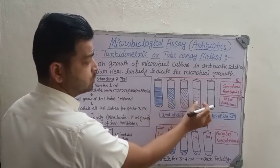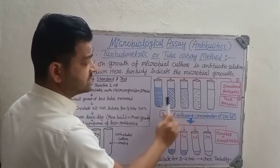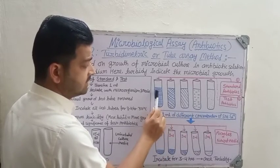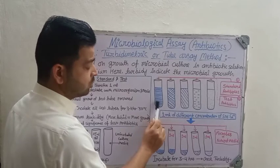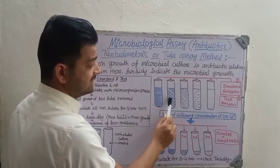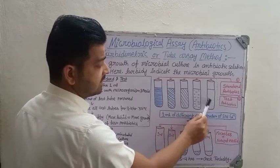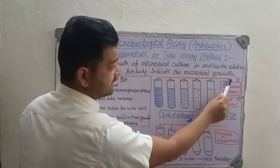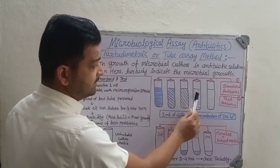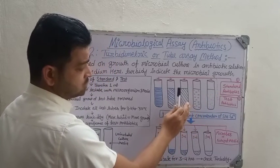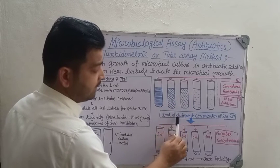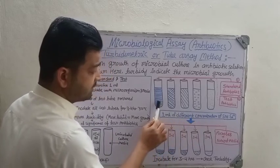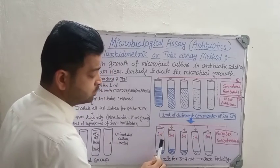We are going to take five test tubes with different concentrations of antibiotics. As you can see in the image, the first tube has the highest concentration, then lesser, then lesser, and so on. This is how we prepare the standard antibiotic at different concentrations.